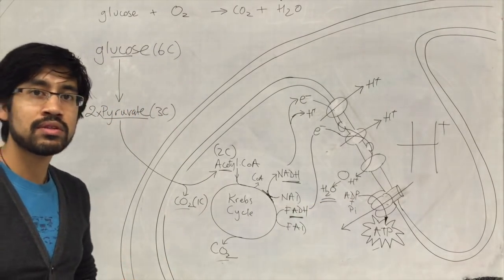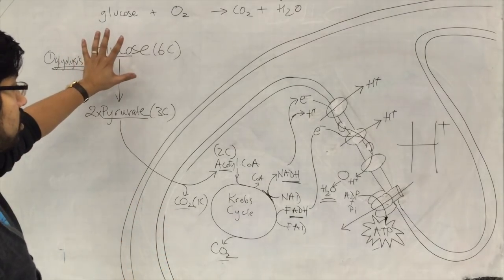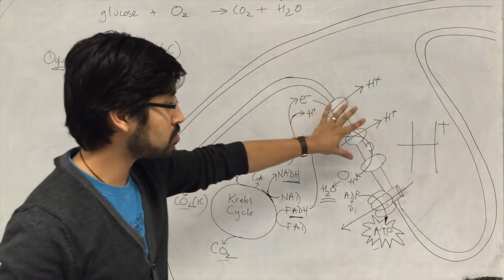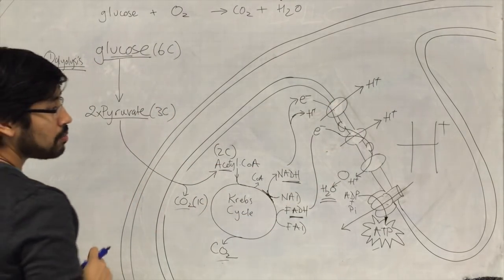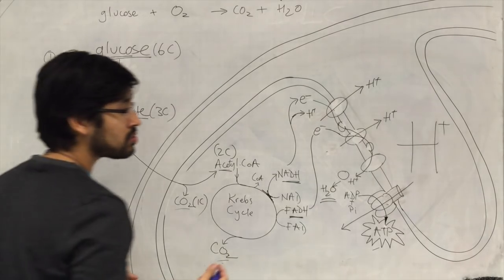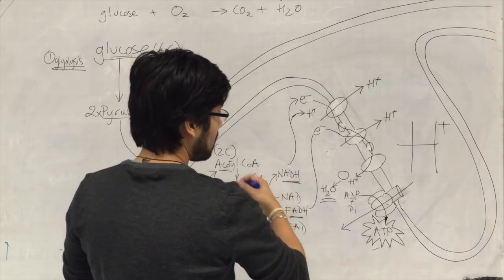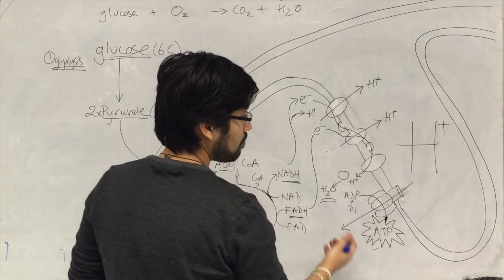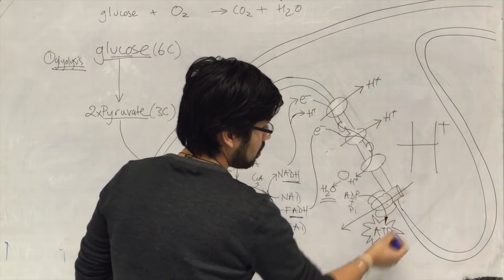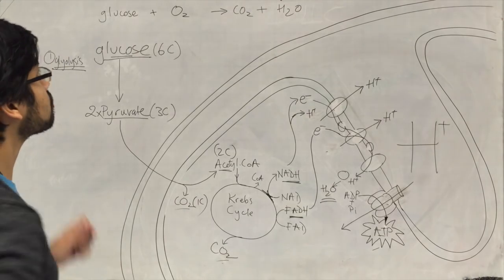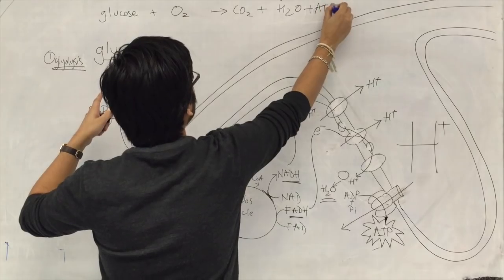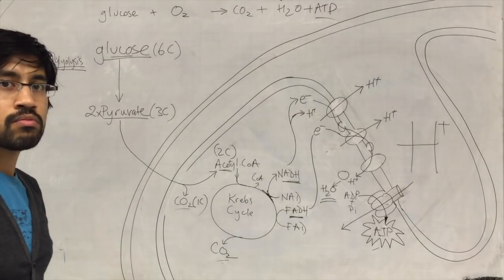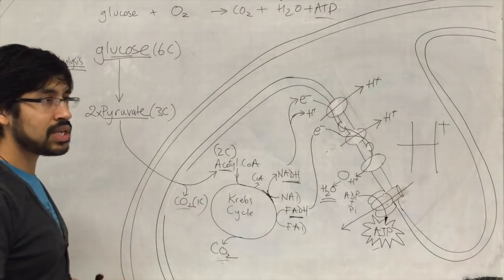So there we have it — that's an overview. Glycolysis, Krebs cycle, electron transport chain. Thanks to those three processes, the energy in the bonds between the atoms forming glucose is released and eventually used to synthesize ATP. We will come back to this and look in detail.